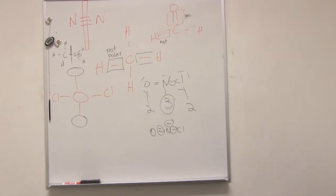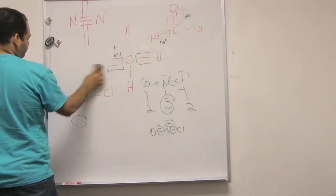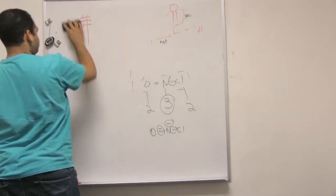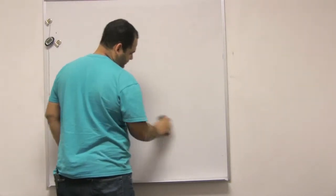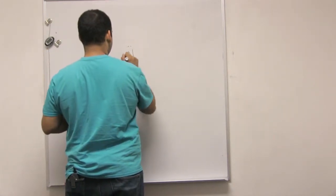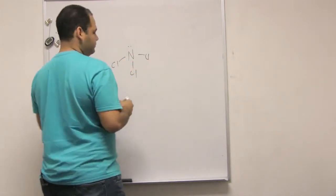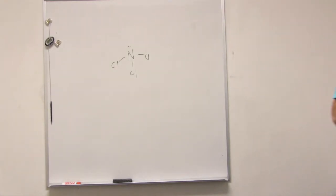Nitrogen trichloride — so that's nitrogen with three chlorines. I need 26 valence electrons.